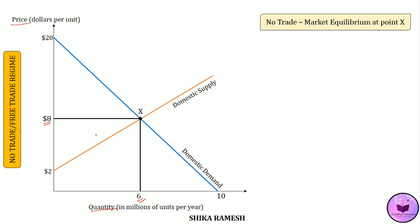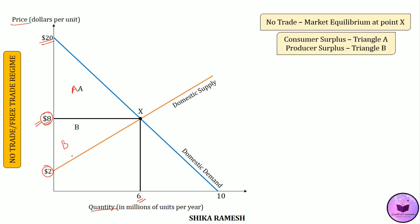The consumer's willingness to pay for the product is $20, while the actual price of the product is only $8. So the consumer surplus is given by triangle A. Similarly, the domestic producer is willing to sell the product at $2 per unit whereas the actual price of the product in the market is $8, so the producer surplus is given by triangle B.